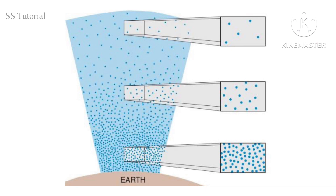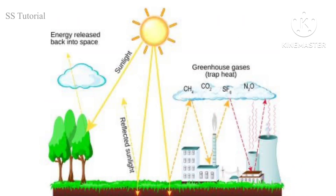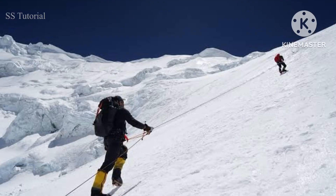As we know, most of the gaseous mass remains near the earth's surface. That's why the concentration of greenhouse gases is also greatest near the earth's surface, and with increasing altitude, the concentration of greenhouse gases decreases. Greenhouse gases absorb and trap solar energy, which heats up the earth's atmosphere. But as their concentration decreases with altitude, solar energy absorbed and trapped by greenhouse gases is very low, so the earth's atmosphere also remains cooler at higher altitudes.